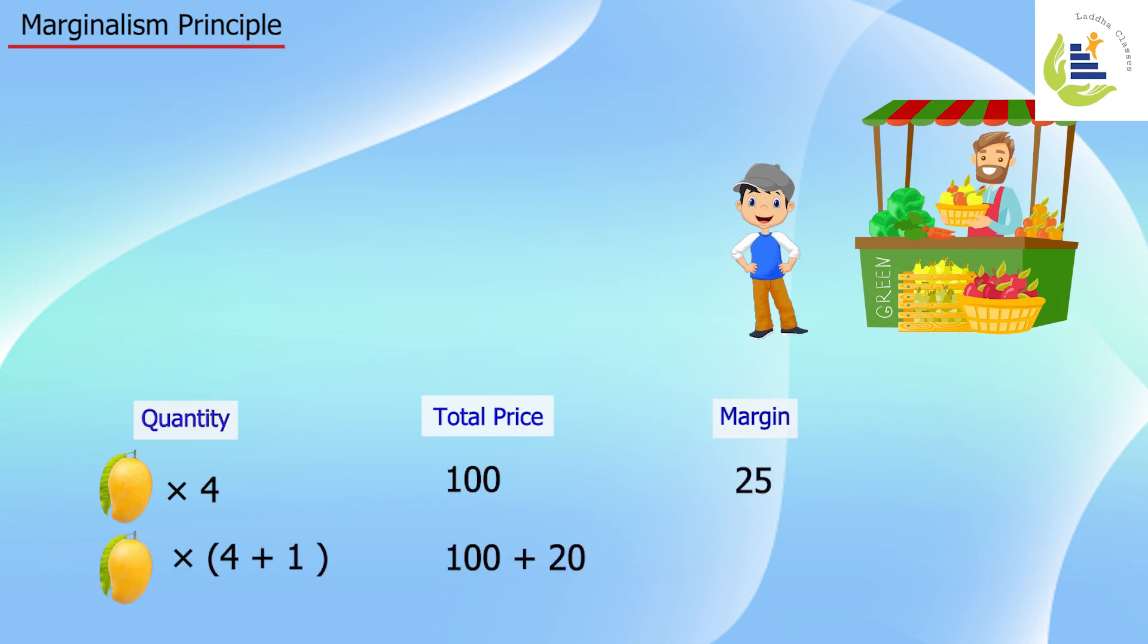His margin for the next unit, or change in the price paid for the next unit, is 20 rupees. Is it worth going for five units or are four units good enough? This decision can be made by the buyer as well.